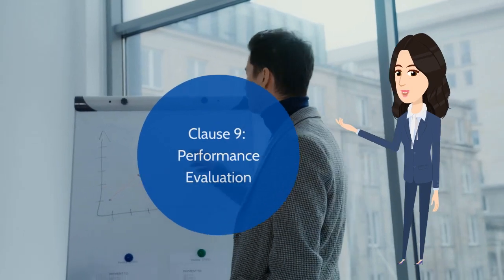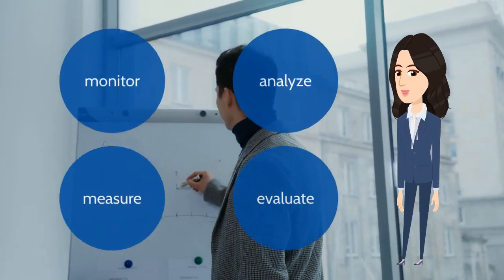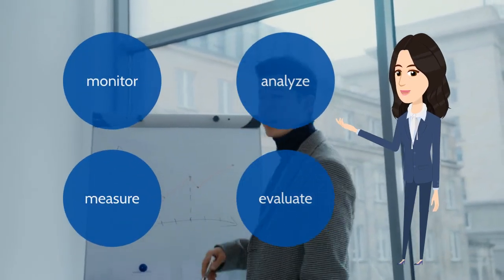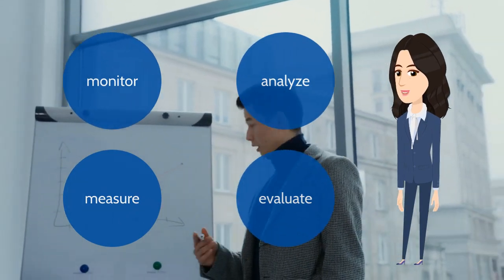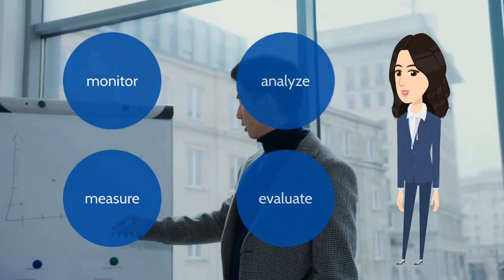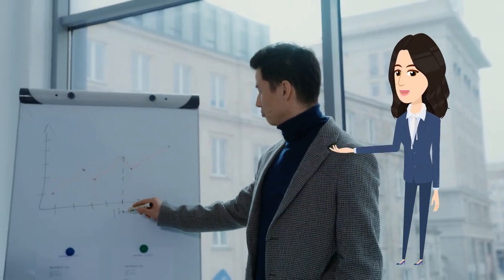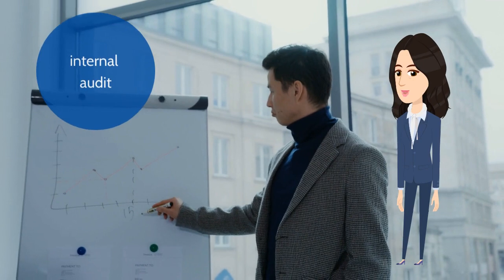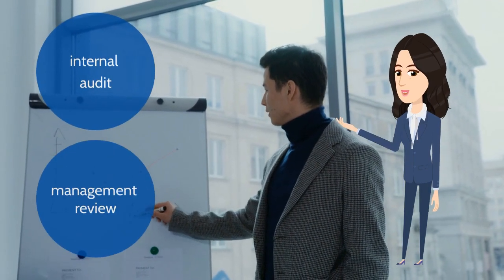Clause 9 is performance evaluation. The organization must monitor, measure, analyze, and evaluate their performance. Besides that, they need to do an internal audit and management review once a year.